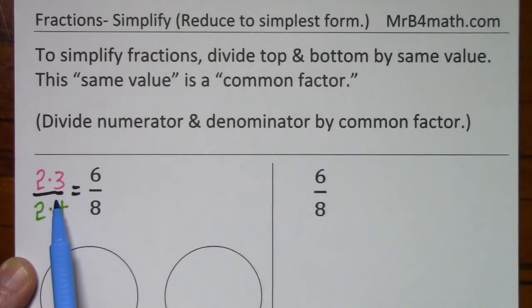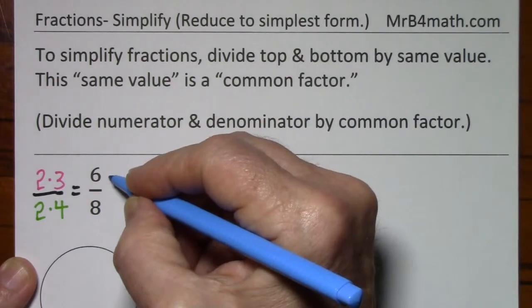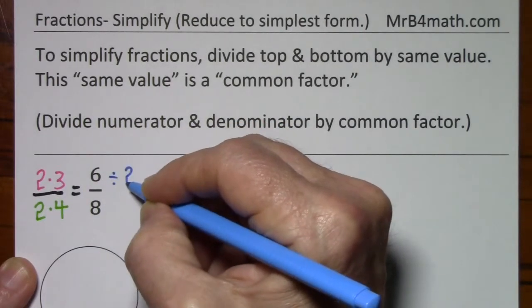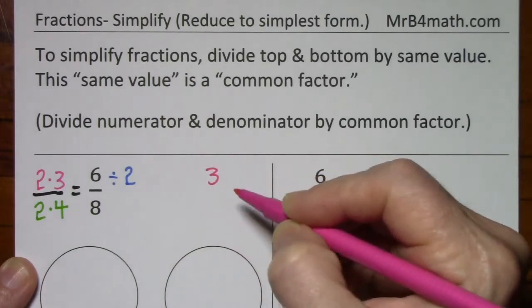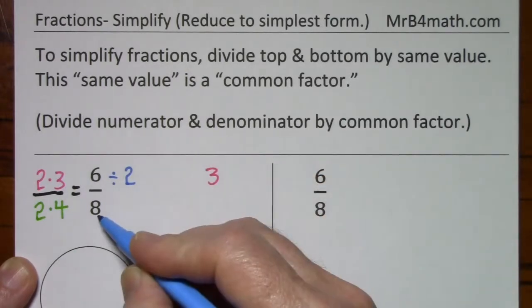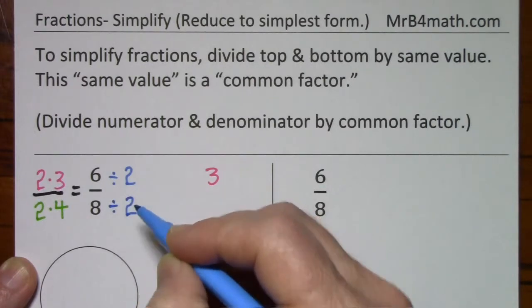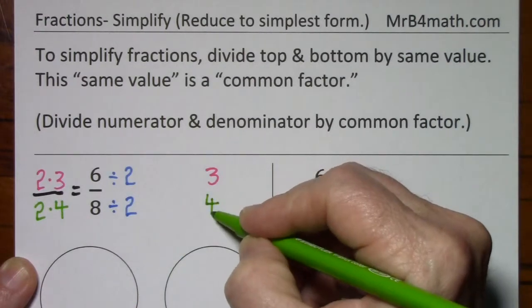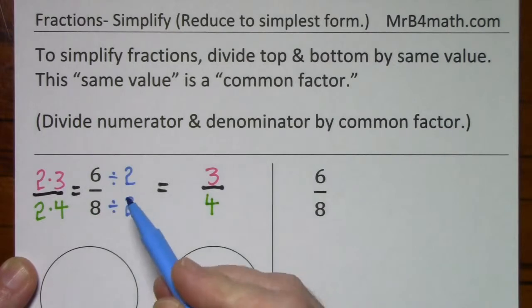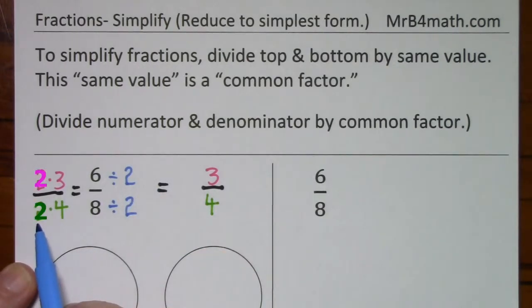But factors also have the property that they will divide out evenly. So 6 divided by 2 is 3, and 8 divided by 2 is 4. So 2 is a common factor of 6 and 8.